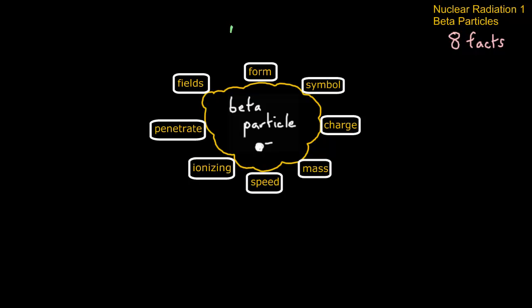So we start with a neutron in one of those unstable nuclei, and the neutron decays or breaks up to form a proton, which of course is positive, and a high energy electron, which of course is negative.